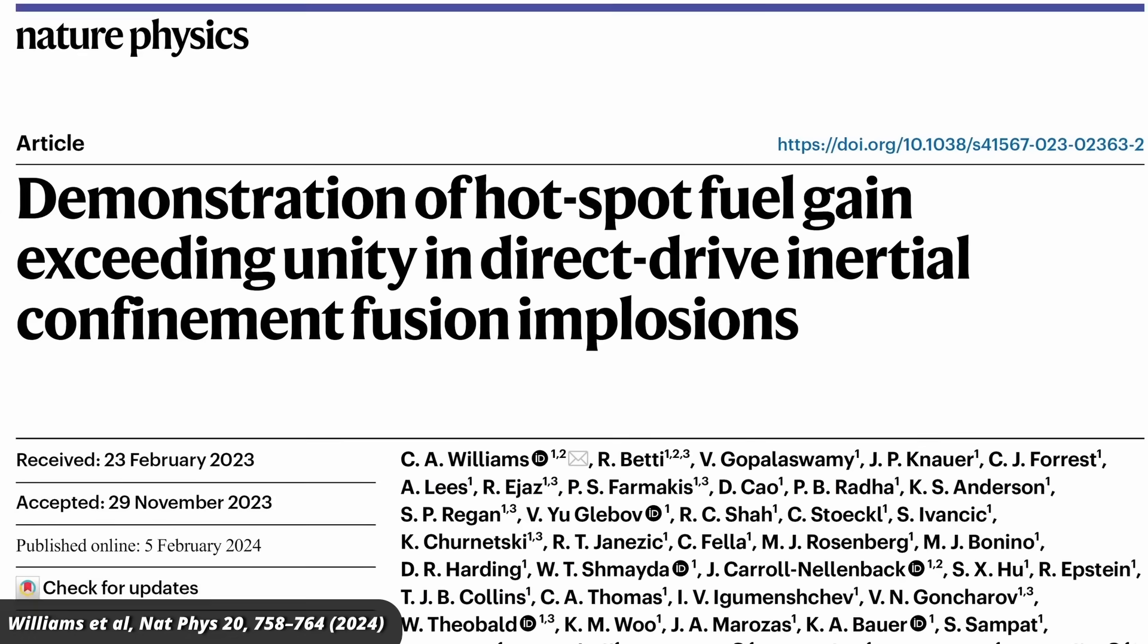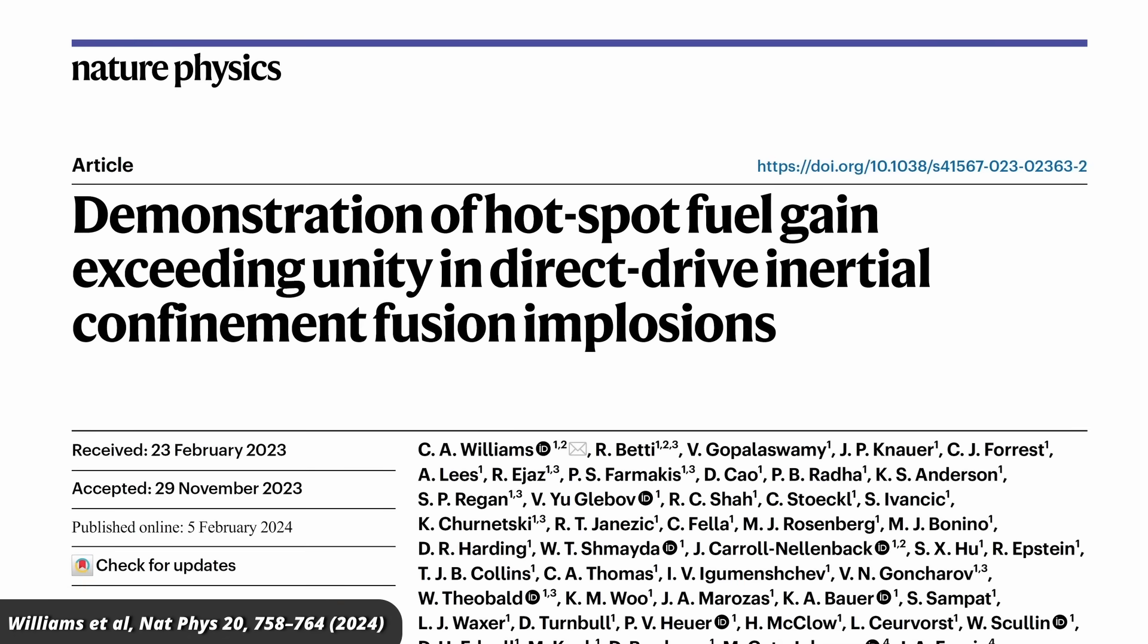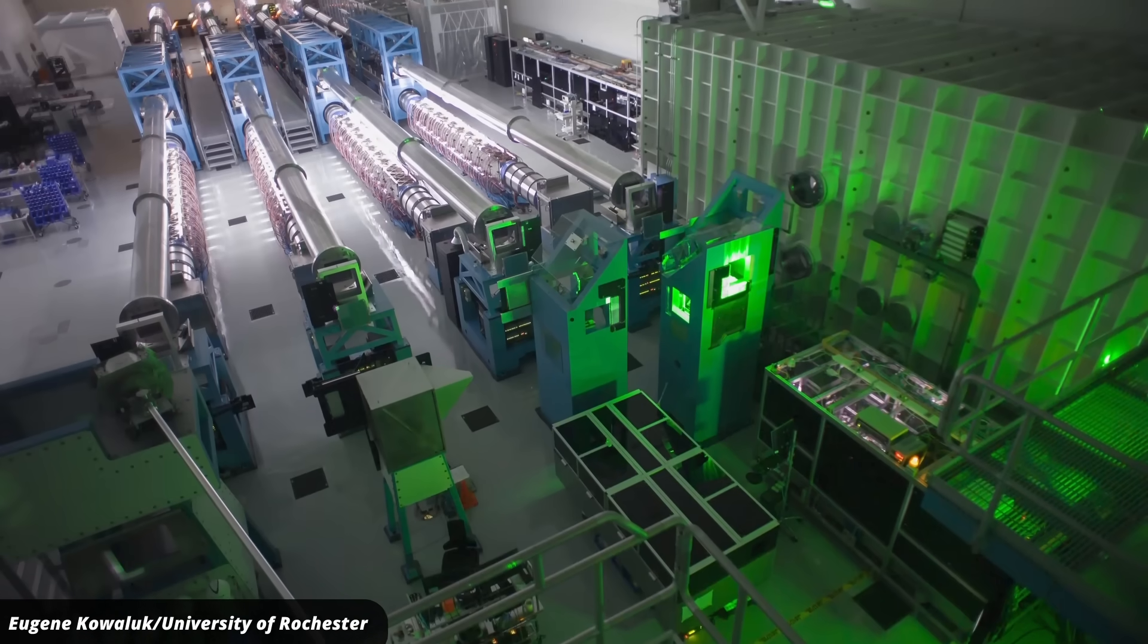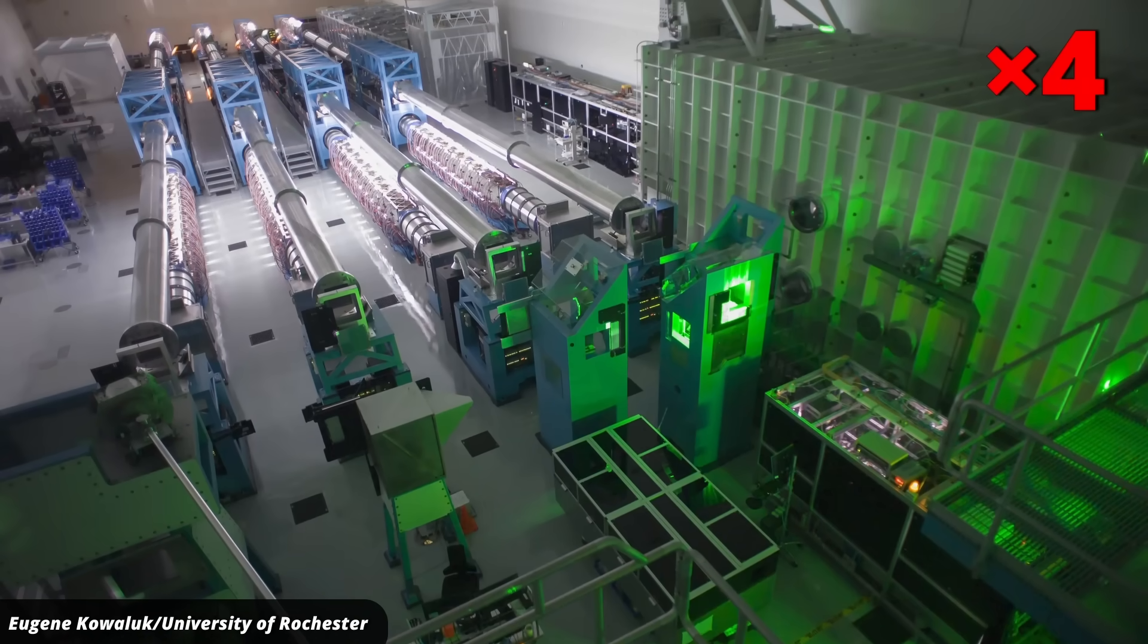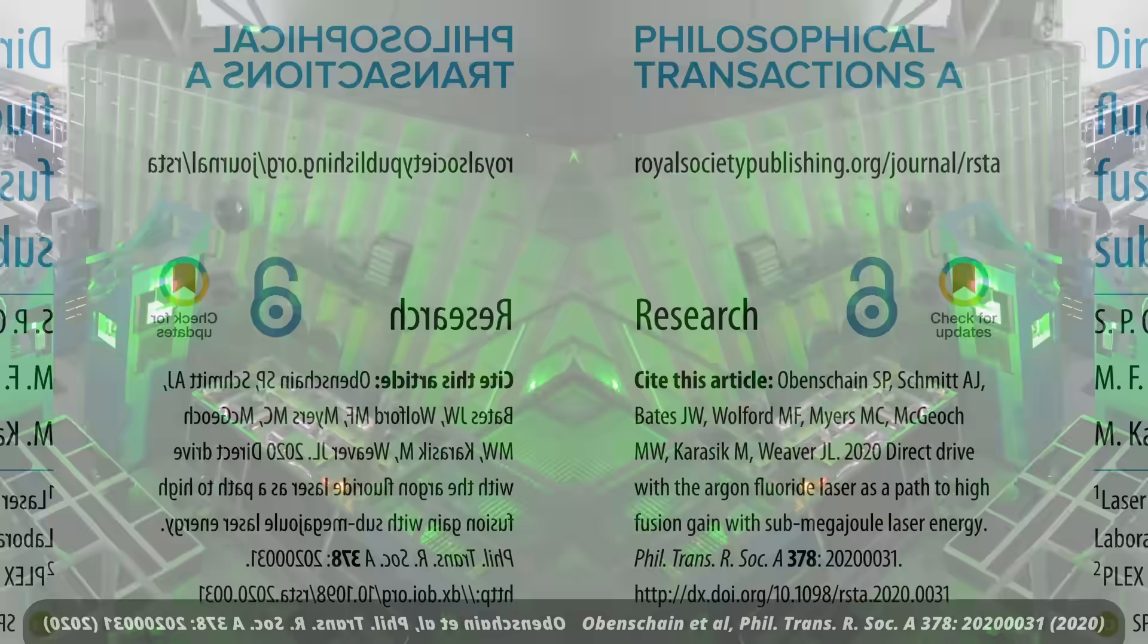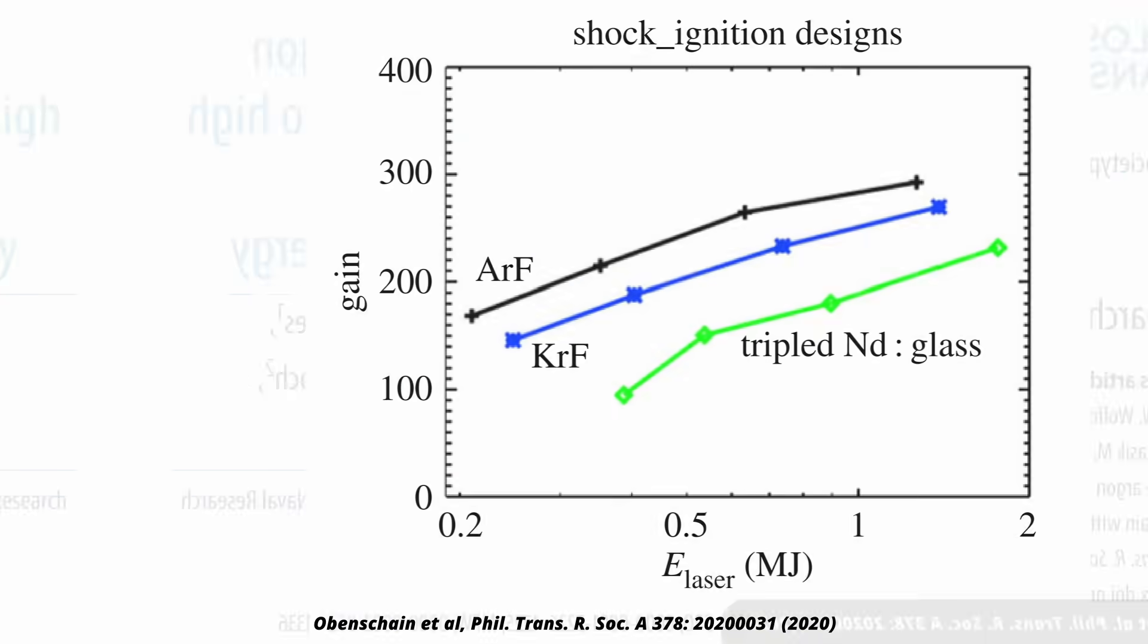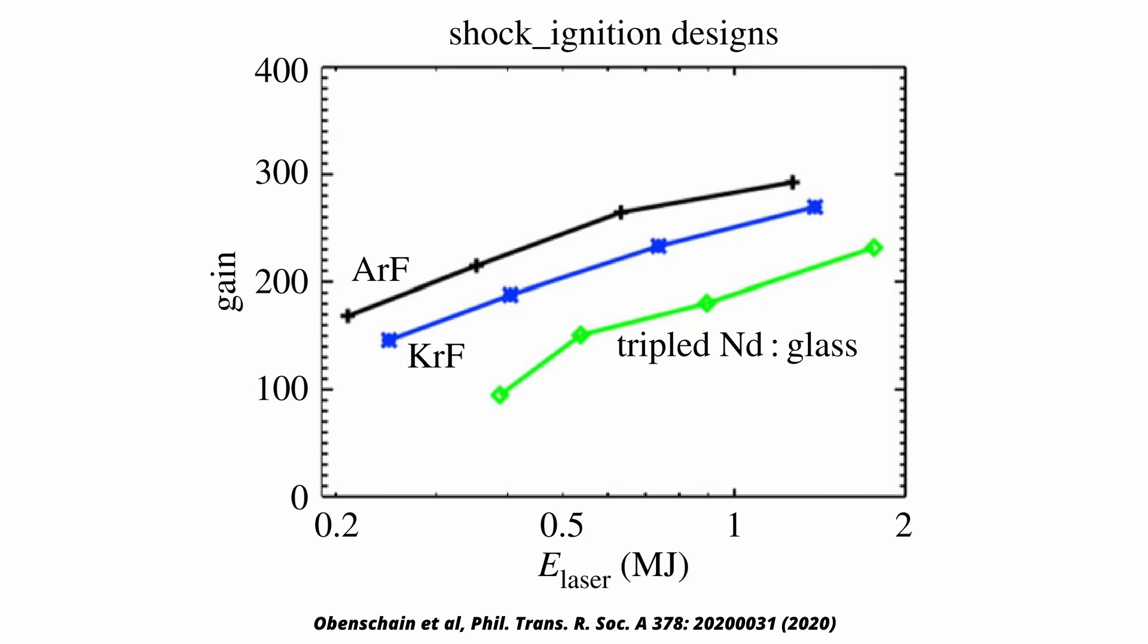But last year, the laser facility Omega at the University of Rochester showed that if you skip the final step with the X-rays, you can deliver about four times as much energy than the NIF to the fuel capsule. And simulations have shown that if you use the UV laser directly, then that gives you a gain at the pellet of up to 150 or so, that would theoretically be 50 times higher than what the NIF does.